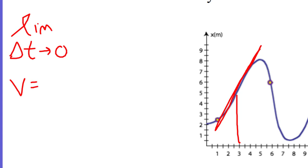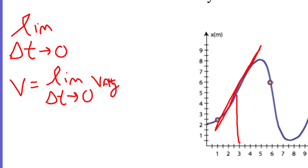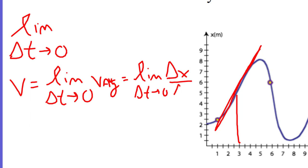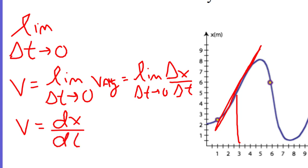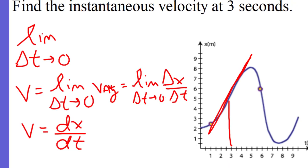The instantaneous velocity is the limit as the change in time approaches zero of the average velocity — which is also the limit as the change in time approaches zero of the change in position over the change in time. This means the velocity equals the slope of the tangent to the curve at this specific point in time, or dx over dt. And that is the calculus behind it.